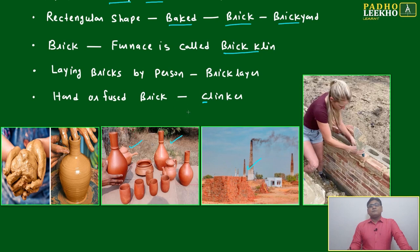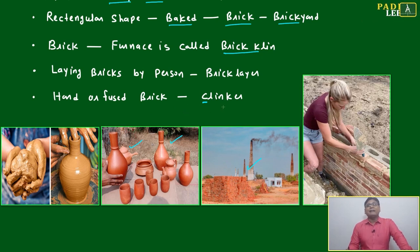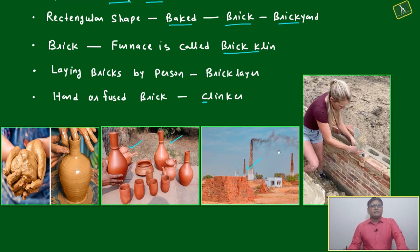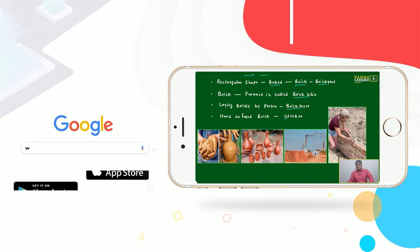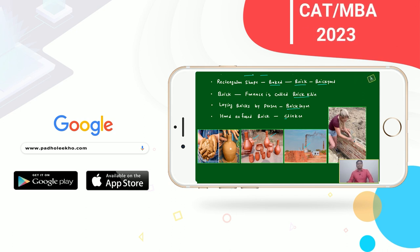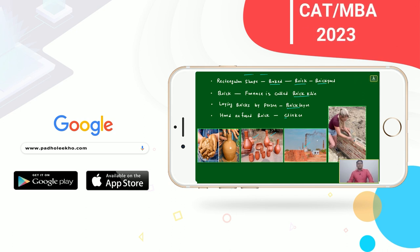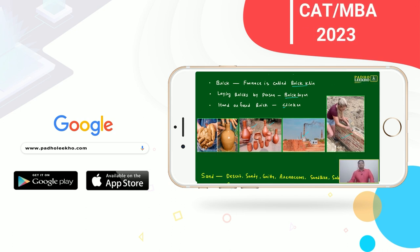Sometimes a few bricks are not baked properly and become very hard — that is called a clinker. And the person who has the profession of laying bricks is called a bricklayer. That profession name is bricklayer, as you can see in this image — this person is laying the bricks.